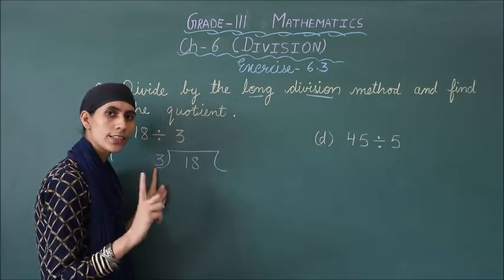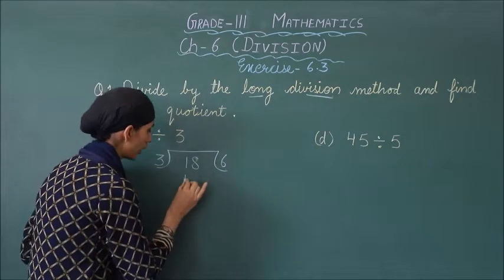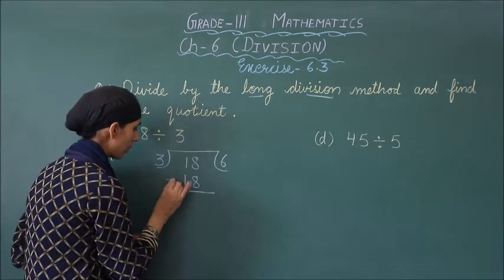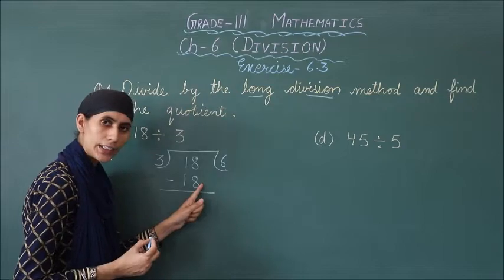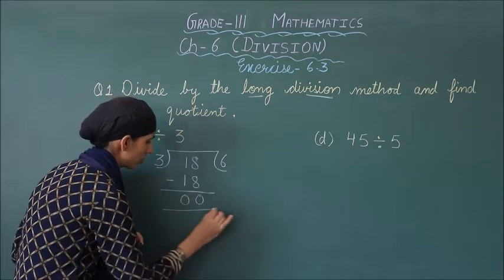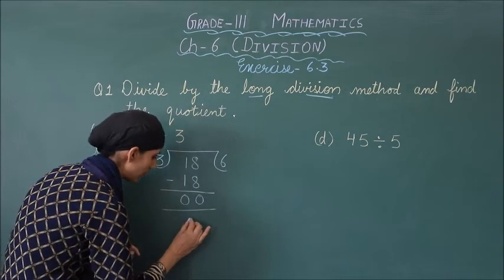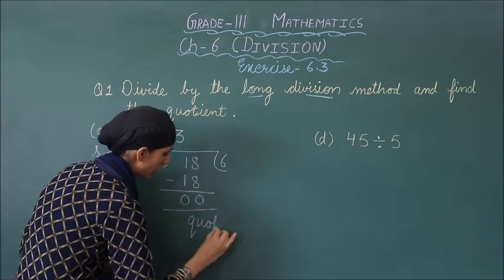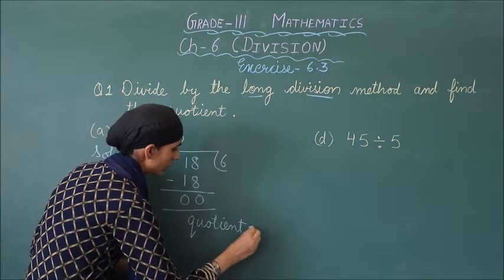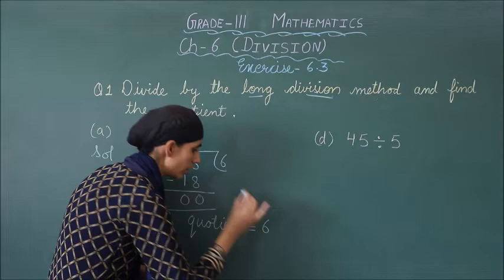So 3 sixes are 18 — write down 18. Next step: subtract. 8 minus 8 is 0, 1 minus 1 is 0. So this means your division is finished. Now find the quotient — what do you write down? Quotient equals to 6. So quotient equals to 6.